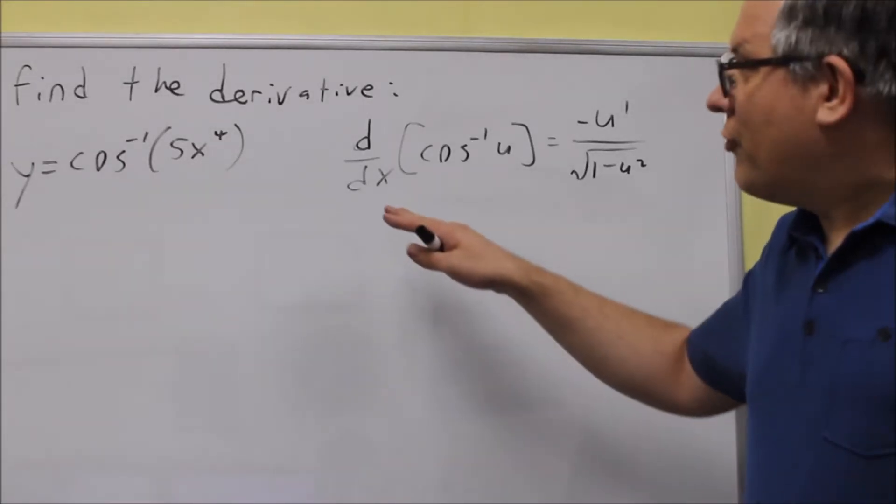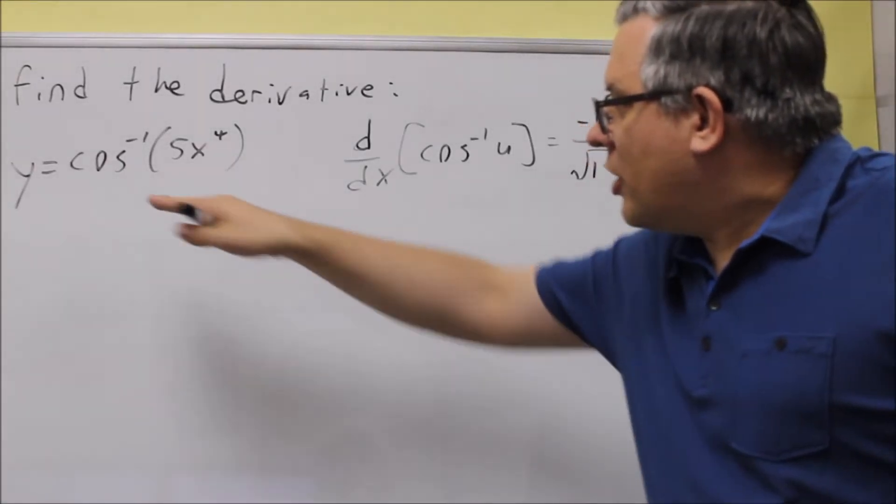Okay, for this next problem, we want to find the derivative of inverse cosine 5x to the fourth.